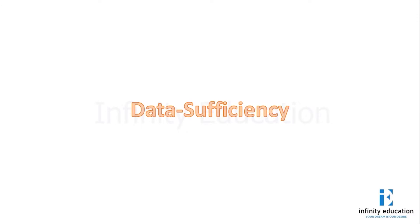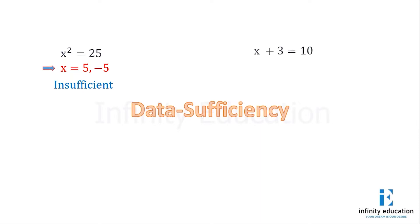Just to give you some basic idea, I have taken an example. If x² = 25, there are two values for x for which the equation can be satisfied: 5 and -5. So I can say this is insufficient because I'm not getting one particular value. But if x + 3 = 10, the value for x should be 7.